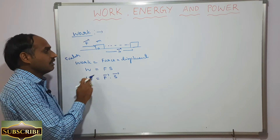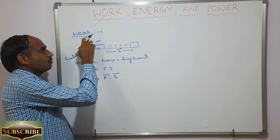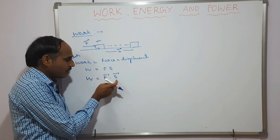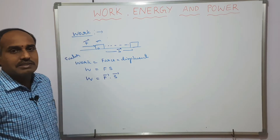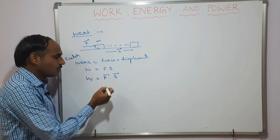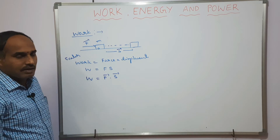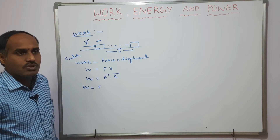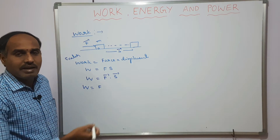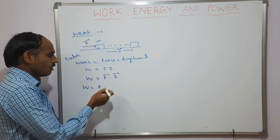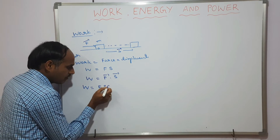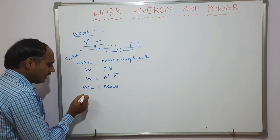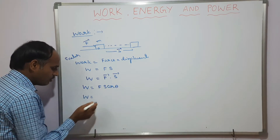Work done is a scalar quantity because force and displacement are both vectors, and the dot product of two vectors gives a scalar. So we define W = F-bar · s-bar. Using the dot product formula, A-bar · B-bar = |A||B| cosθ, we get W = F s cosθ.